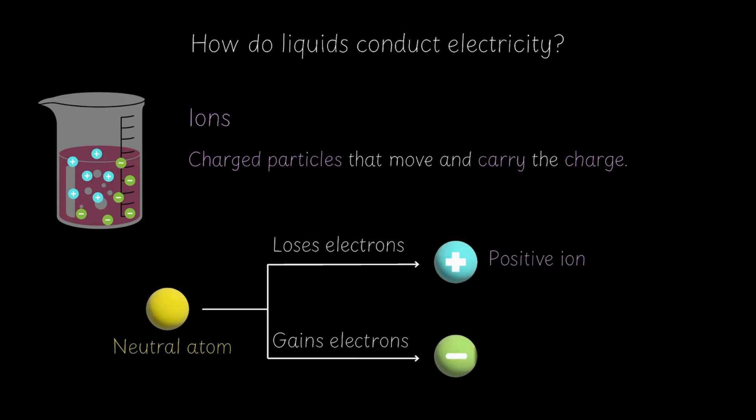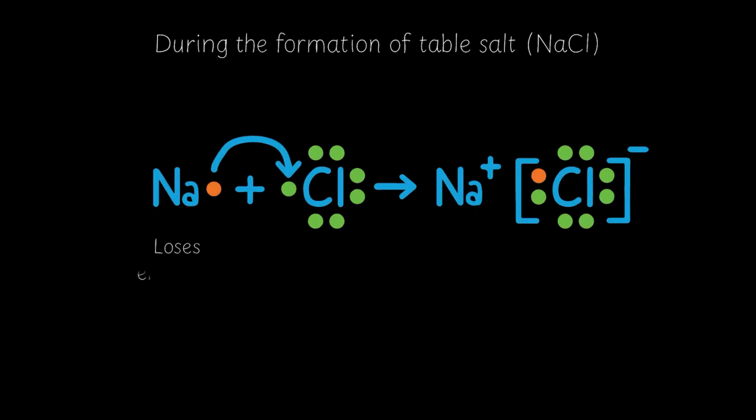Ions are just atoms or molecules that have gained or lost electrons. And when that happens, they become positively charged or negatively charged. And we call them a positive ion or a negative ion respectively. For example, during the formation of table salt or sodium chloride, a sodium atom can lose an electron to form a sodium ion, Na+, and a chlorine atom can gain an electron to become a chloride ion, Cl-.